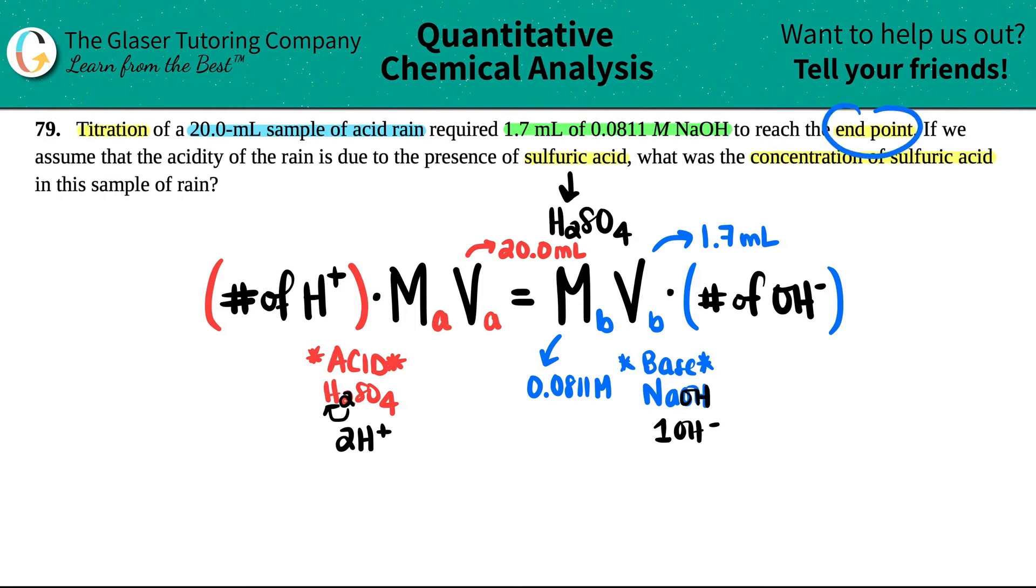Now, the endpoint - for anyone who's asking what an endpoint is, you've probably done a titration lab. Basically, when you do titrate acids and bases, you're going to see that there's going to come a point in time in which the color is going to change in your flask. That color change signifies that you have reached the endpoint. This question, though, we just need to find the concentration of sulfuric acid.